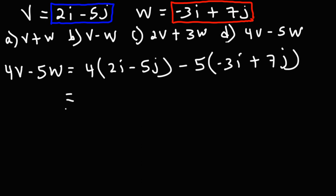Just like before, we're going to distribute. 4 times 2i is 8i, and 4 times negative 5j is negative 20j.